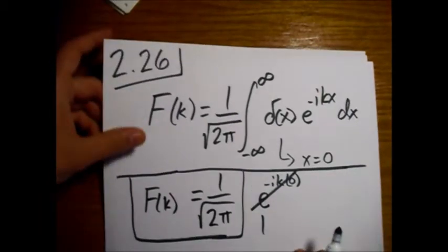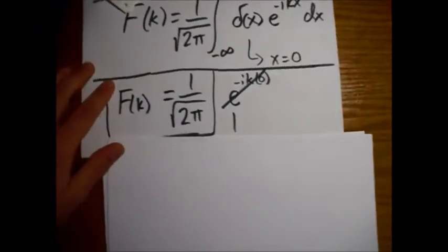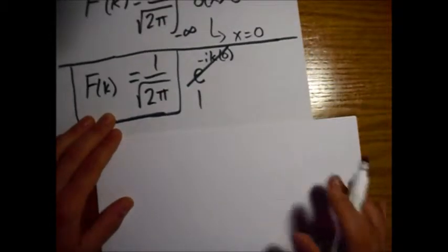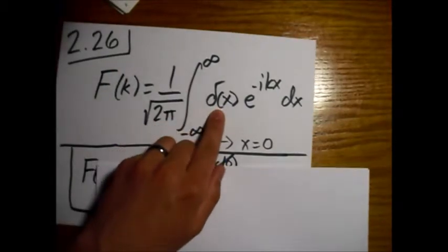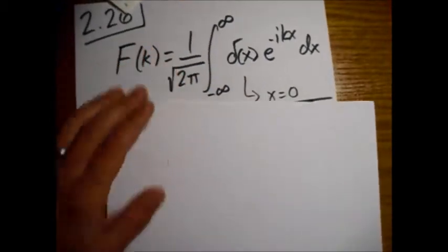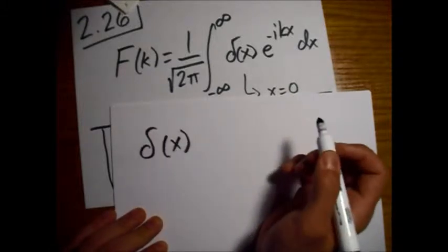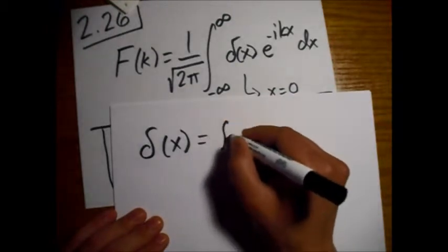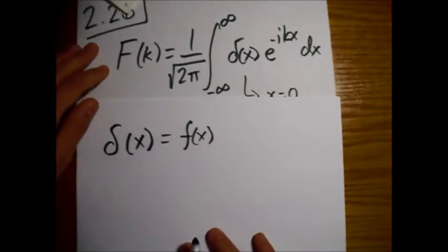Now, we can use Plancherel's theorem, which will tell us the inverse Fourier transform. So our x function, in this case, is the Dirac delta function. So this is what this looks like. Alright, I'll go ahead and write a little f of x so it looks like the equation from the book. Alright.